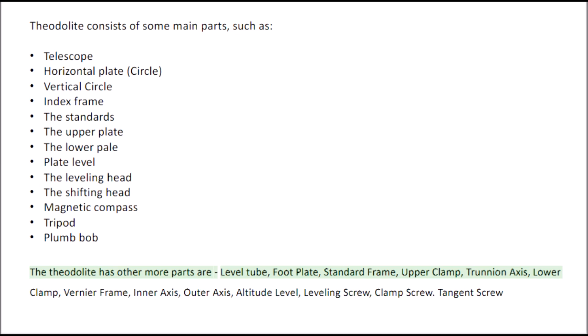The theodolite also has other parts including: Foot Plate, Standard Frame, Upper Clamp, Trunnion Axis, Clamp, Vernier Frame, Outer Axis, Altitude Level, Leveling Screw, Clamp Screw, and Tangent Screw.